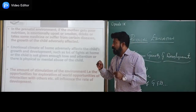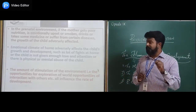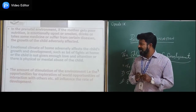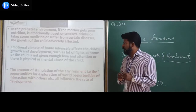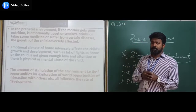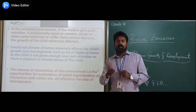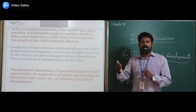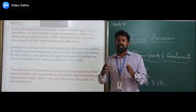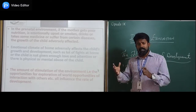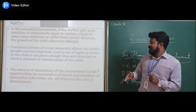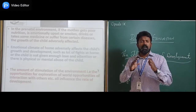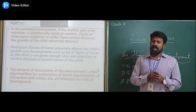The second point in environment is the emotional climate, which can adversely affect the child's growth and development — such as a lot of fights at home, the child not being given enough love and attention, or physical or mental abuse of the child. If there are lots of fights at home and the child is not given enough love and affection, there will automatically be an adverse effect on the child's growth and development.